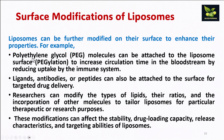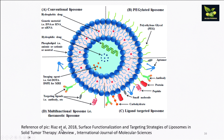According to the purpose for which we are preparing the liposome, we can alter its composition. Surface modifications include PEGylation — attaching polyethylene glycol molecules — which increases circulation time in the bloodstream by reducing uptake by the immune system. We can also attach ligands, antibodies, and peptides to the surface for targeted drug delivery. By modifying the types and ratios of lipids, we can tailor liposomes for specific purposes, affecting stability, drug loading capacity, release characteristics, and targeting abilities.